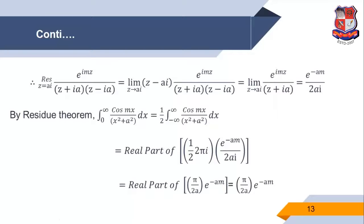Basically, there are three types of real integration where we apply the Cauchy residue theorem. First, if the integration limit is 0 to 2π, the curve is a unit circle. Second, if the limit is -∞ to ∞, the curve is the upper half of the plane. Third type also has limit -∞ to ∞, but the function is multiplied with cos(mx) or sin(mx); we replace with e^(imz), and if cos(mx) is given, the real part is the solution, and if sin(mx), we use the imaginary part.